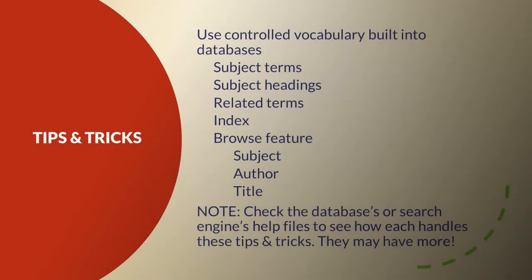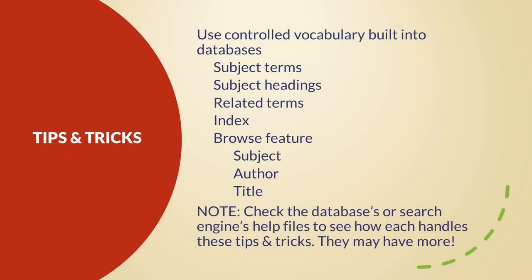Sometimes a database will let you use a controlled vocabulary — an organized arrangement of words and phrases used to index and retrieve content through browsing or searching. In a specialized field, a controlled vocabulary search brings better results by using the specific terms everyone in that field uses. A browse search is another type of search that returns an alphabetical list, with each item linking to more items, giving you a very curated list.